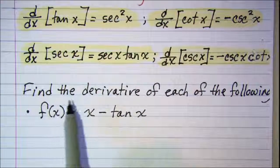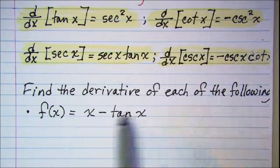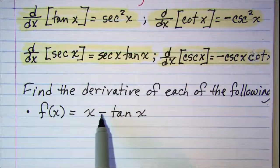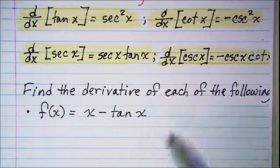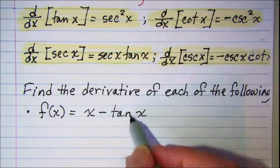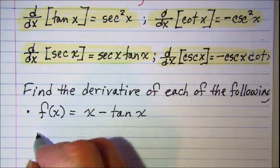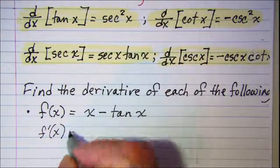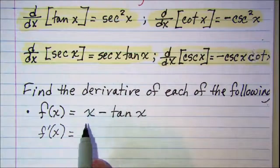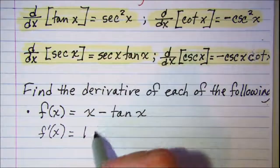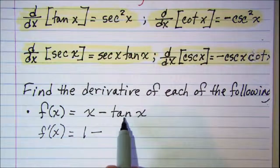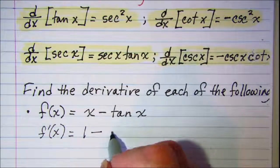We're asked to find the derivative of each of the following. Our first one is f of x equals x minus tangent x. We can find the derivative of each term separately: f prime equals the derivative of x, which is one, minus the derivative of tangent, which is secant squared x.